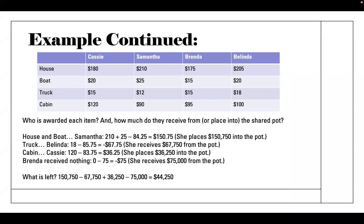Looking at the pot: Samantha put in $150,750; Cassie put in $36,250; Belinda received $67,750; and Brenda took out $75,000. What's left is $44,250. We divide that by four for the second allocation, and every sister receives an additional $11,062.50. And that is fair division using the sealed bids method.